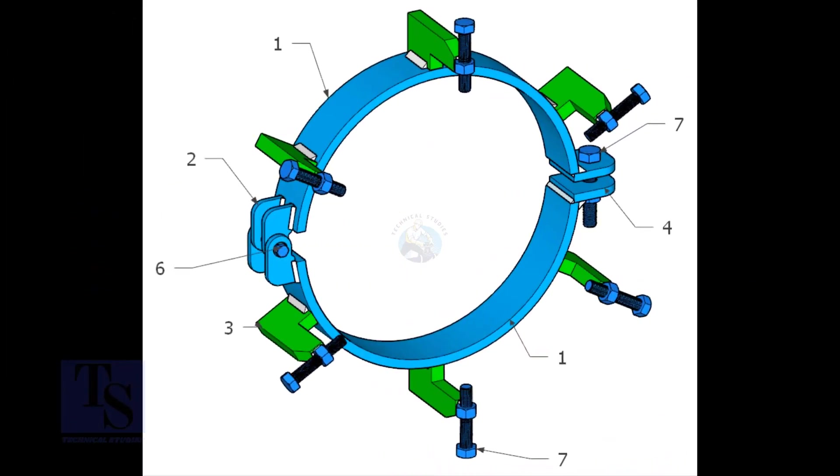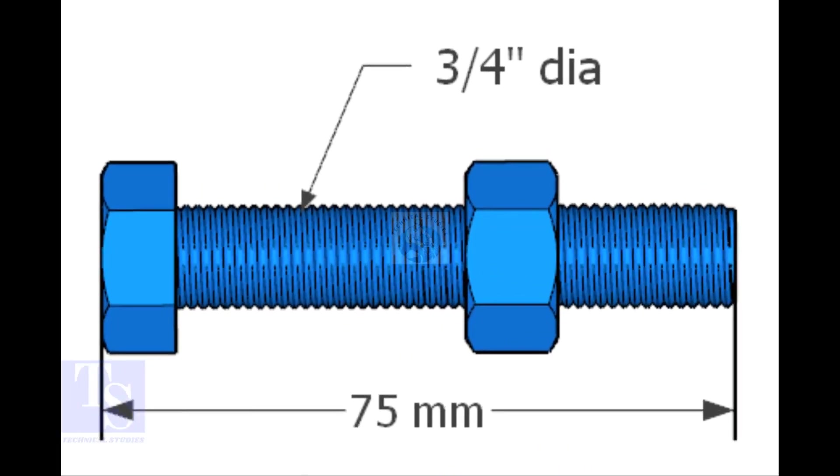Item number seven is nut and bolt, three-quarters diameter and three inches long. The quantity is seven numbers.